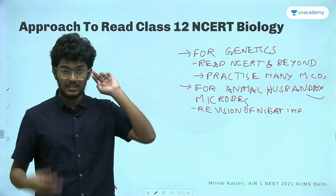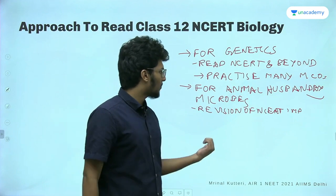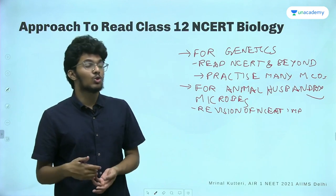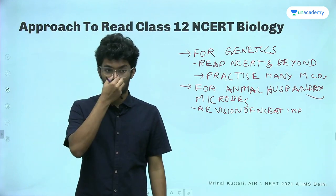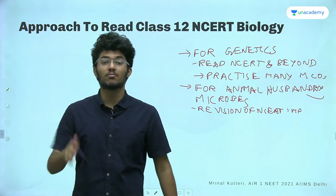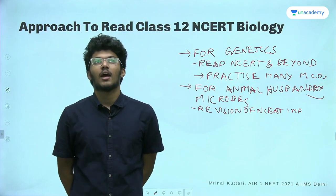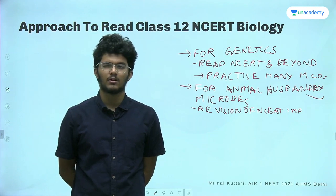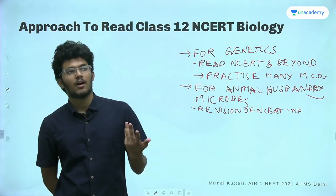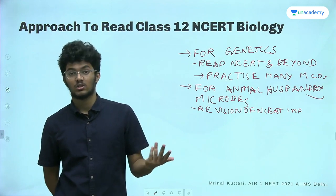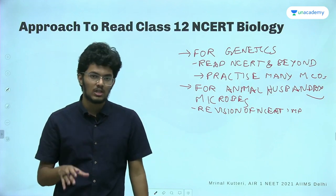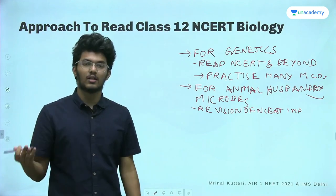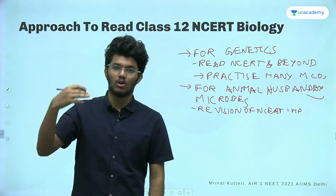Revision of NCERT as many times as you can is important for these chapters. The topics that come after — biodiversity, ecosystem, and environmental issues — again, revision is most important. For ecosystem, the part with food chains and energy flow, and in Organisms and Populations the part about population growth and the different curves, those are things which can require practice. I did struggle a little bit with food chains — getting an understanding of energy flow and all that.